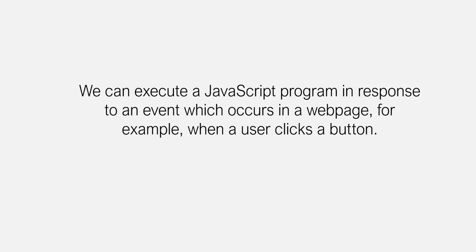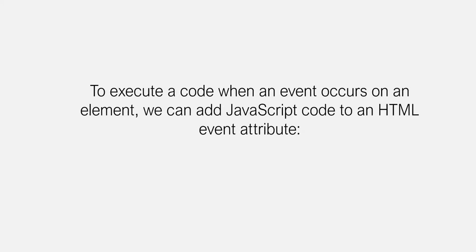In the last lecture, we learned that we can execute a JavaScript program in response to an event which occurs in a web page — for example, when a user clicks a button. To execute JavaScript code when an event occurs on an element, we can add JavaScript code to an HTML event attribute.